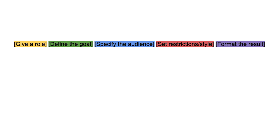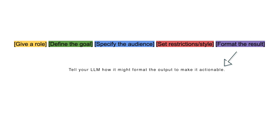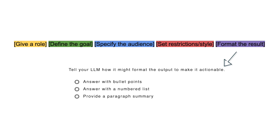The last part of this 5-part prompt formula is to format the result, like we saw in an earlier example. I honestly think this can be an essential part of your prompt. To format the result, you're going to tell your LLM how to format the output to make it actionable. This could be as simple as: answer with bullet points, answer with a numbered list, provide a paragraph summary, put it in a chart, and so on. It will save you so much time.